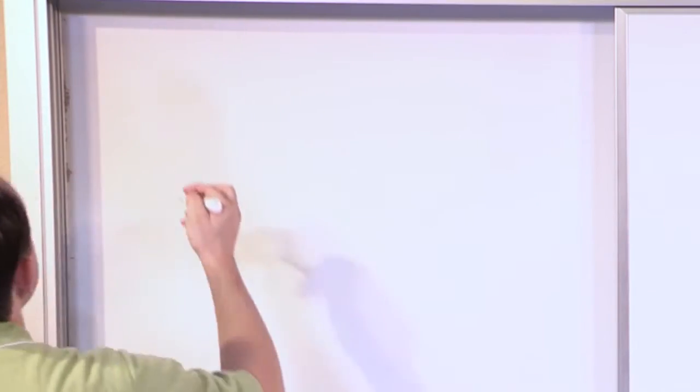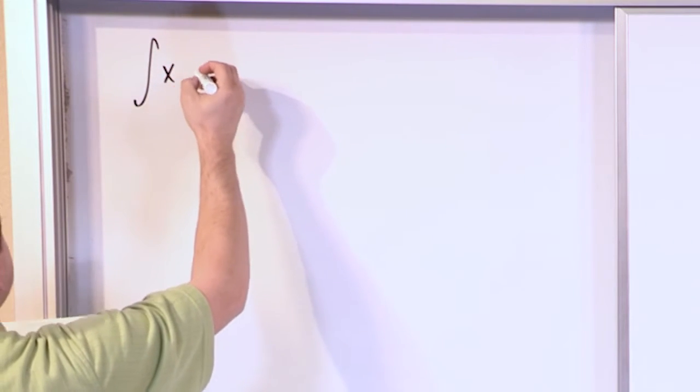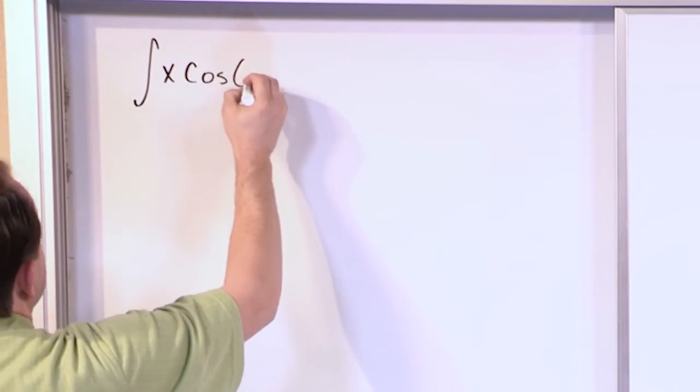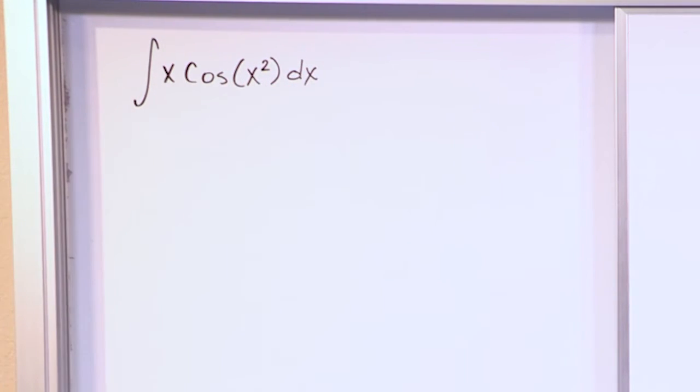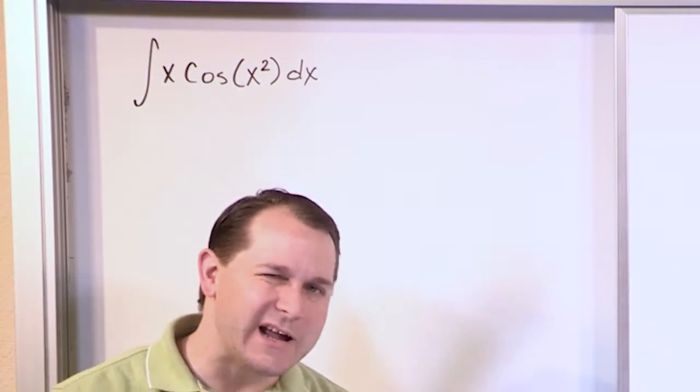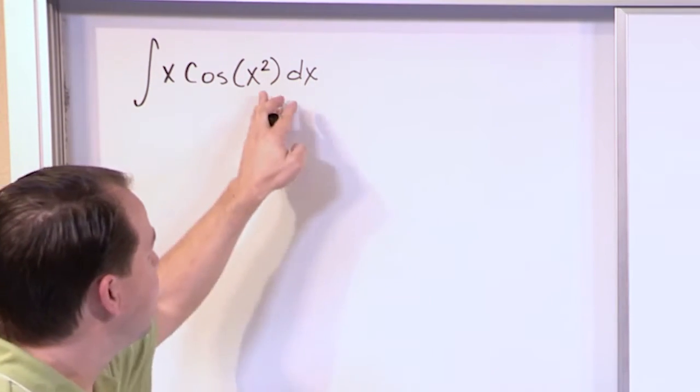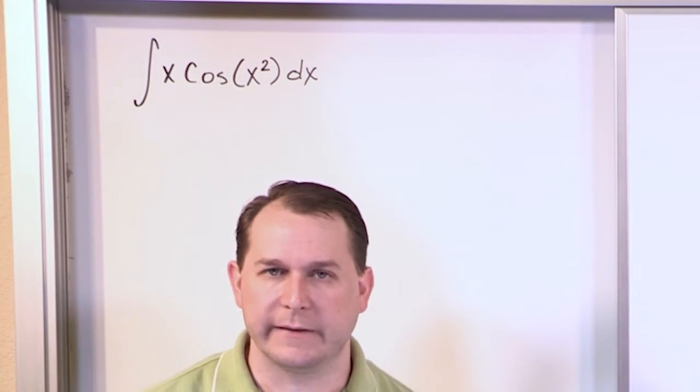We'll do a few problems here of increasing complexity. What if we had the integral of x times cosine of x squared dx? Just by staring at this, you can see that it doesn't fit any form of what we've done so far. First of all, we have the cosine of something, so we kind of know how to integrate that, but the argument inside is not cosine x, it's cosine x squared.